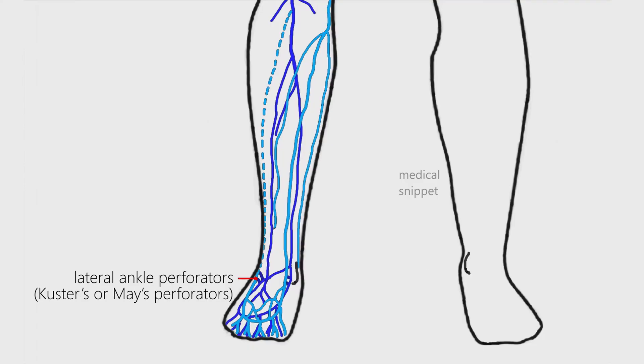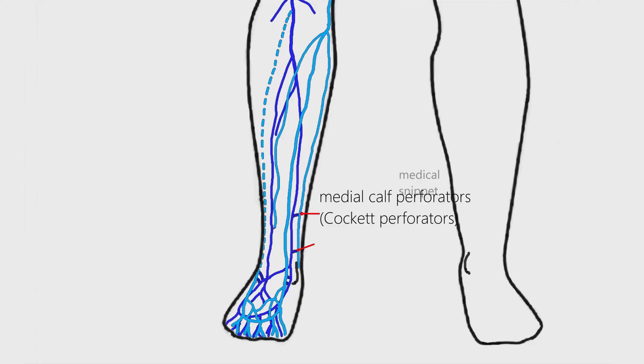The lateral ankle perforators are also called Custer's or May's perforators. In the leg, the medial calf perforators, also known as Cockett perforators, are the important ones. These connect the posterior arch vein of greater saphenous vein to the posterior tibial vein.